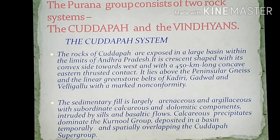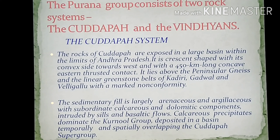The rocks of Kadappa are exposed in a large basin within the limits of Andhra Pradesh. It is a crescent shape with its convex side towards the west and a 450 km long concave eastern thrusted contact. It lies over the peninsular gneiss and the linear greenstone belts of Kadri, Gadwal, and Wellingalu with a marked non-conformity. The sedimentary fill is largely arenaceous and argillaceous, with subordinate calcareous and dolomitic components, intruded by sills and basaltic floors.